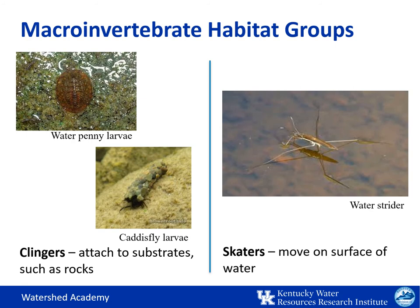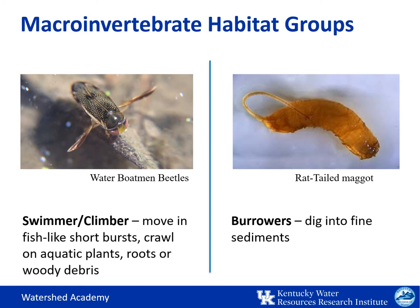Macroinvertebrates also display a wide range of mobility and use various habitats in the stream environment. Clingers, such as a water penny or caddisfly larvae, are attached to substrates like rocks. Skaters move on the surface of the water. Swimmers or climbers move in short bursts and crawl on aquatic plants, roots, or woody debris — an example is water boatman beetles, which breathe from a bubble of air kept underneath their bodies. Burrowers dig into fine sediments — an example is the rat-tailed maggot, whose tail-like structure is used to breathe in low oxygen environments. Because they can survive in extreme environments, they are useful as indicators of non-ideal water quality conditions.